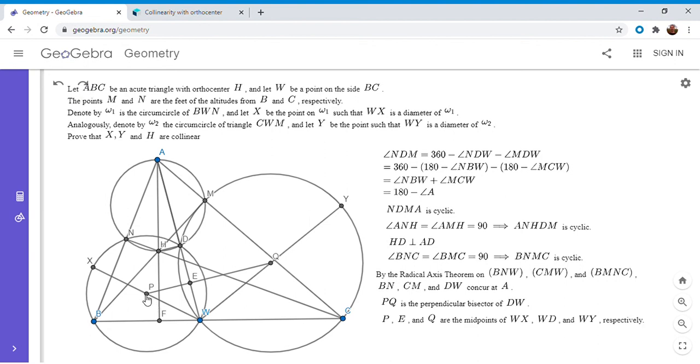Since P, E, and Q are the midpoints of WX, WD, and WY, that means X, D, and Y have to be collinear. And not only that, since PQ is perpendicular to AW, XY has to be perpendicular to AW. This is what I just said - X, D, and Y have to be collinear since P, E, and Q are collinear. And also XY has to be perpendicular to AW since PQ is perpendicular to AW.